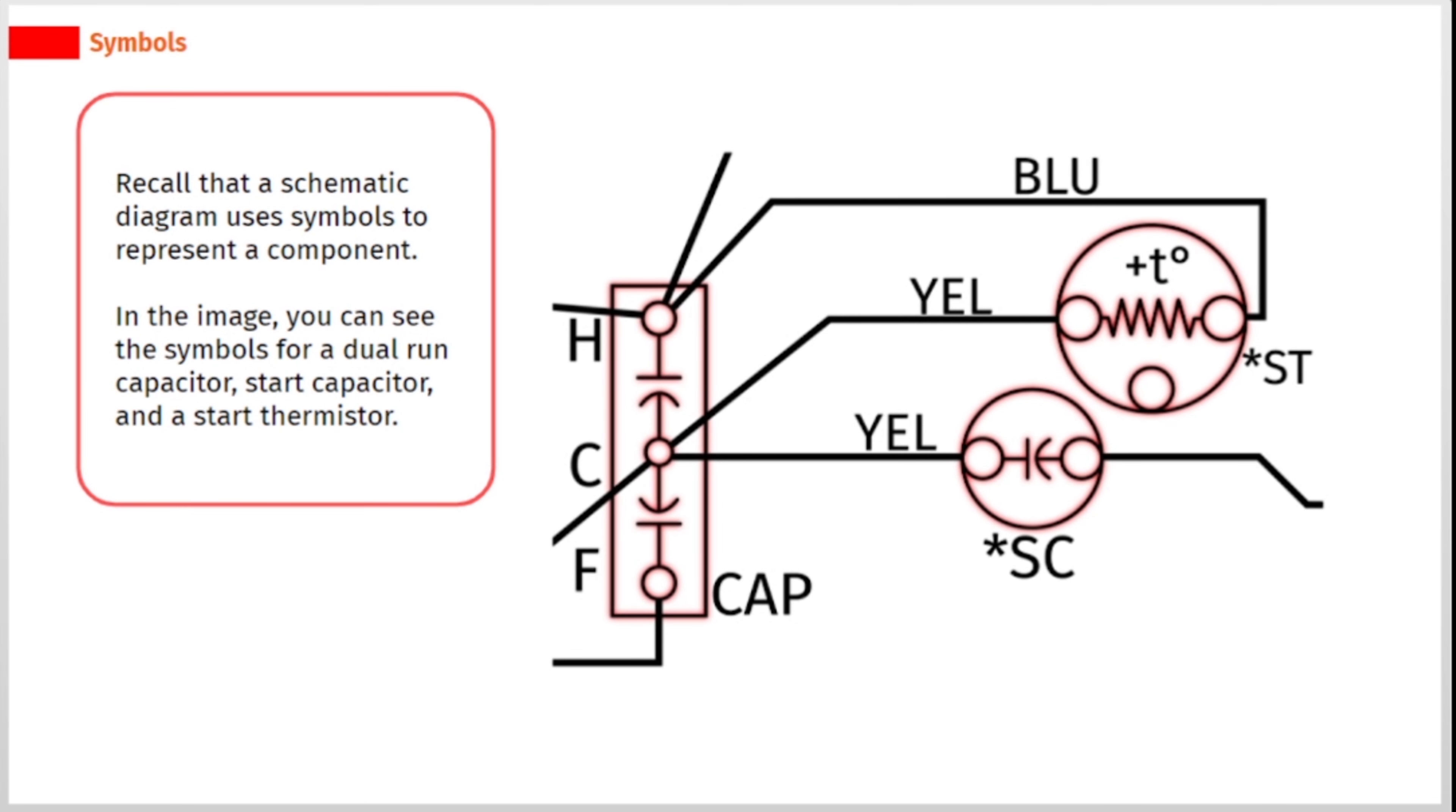Recall that a schematic diagram uses symbols to represent a component. In the image, you can see the symbols for a dual run capacitor, start capacitor, and a start thermistor.